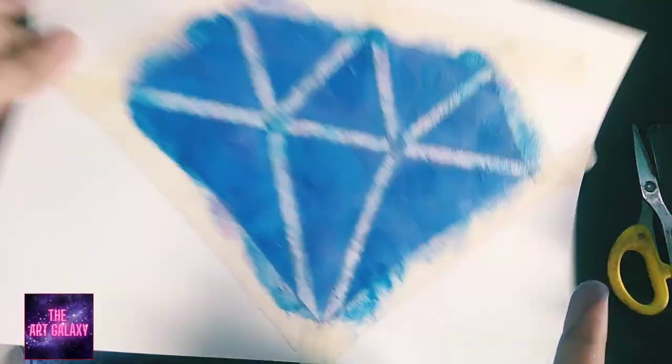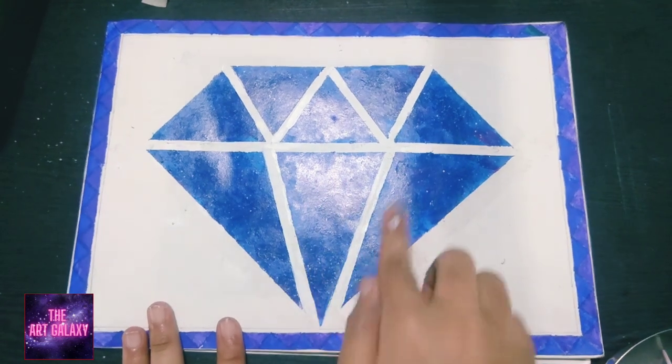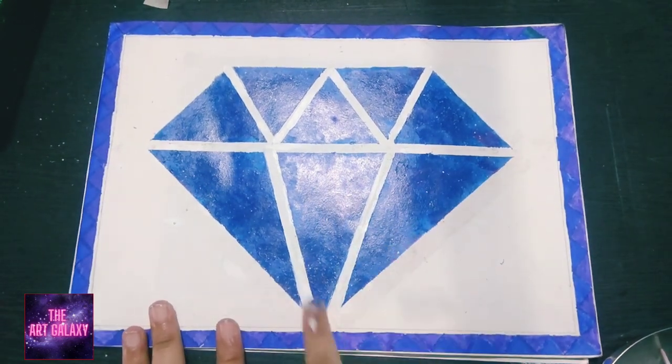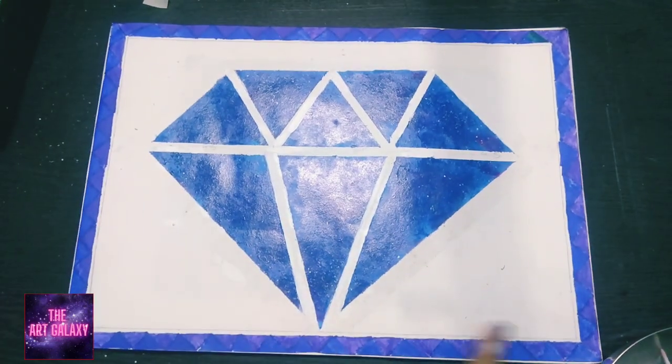Now as you can see, we have done painting our galaxy diamond. Let it dry completely. Now as you can see, I have removed all the masking tape and this is our final result. I have drawn a simple border using a sketch pen.